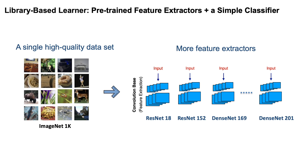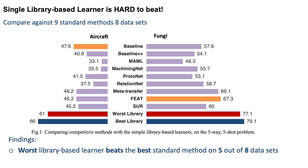Adding more feature extractors trained on that dataset is actually the best path to achieve higher performance. Here we compare against nine standard methods over eight different datasets, and we found that the worst library-based learner beats the best standard method on five out of eight datasets.